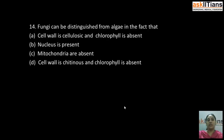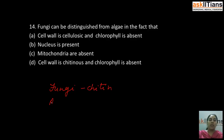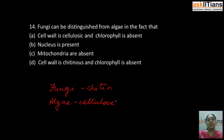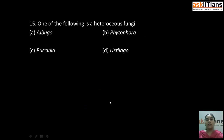Our next question is: fungi can be distinguished from algae in the fact that — A) cell wall is cellulosic and chlorophyll is absent, B) nucleus is present, C) mitochondria are absent, D) cell wall is chitinous and chlorophyll is absent. The correct answer is D: cell wall is chitinous and chlorophyll is absent. In fungi the cell wall is of chitin, whereas in algae the cell wall is of cellulose. Chlorophyll is absent in fungi but present in algae.